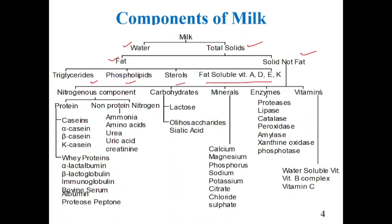Under solid not fat we have nitrogenous components, carbohydrates, minerals, enzymes, and water-soluble vitamins (B complex). Under nitrogenous components we have proteins and non-protein nitrogen. Non-protein nitrogen includes amino acids, urea, uric acid, and creatine.